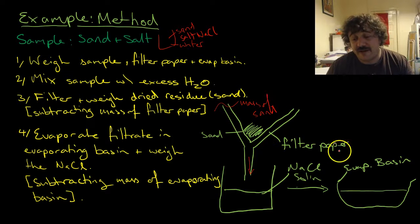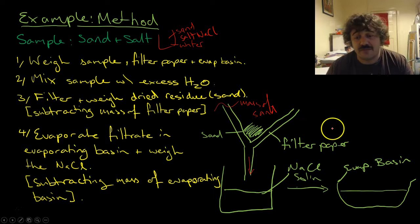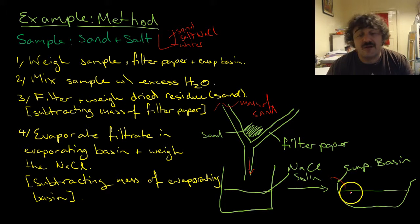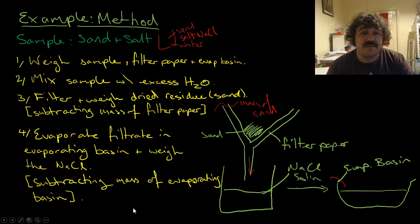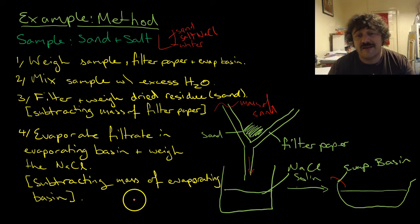Then we evaporate the filtrate in an evaporating basin, probably in an oven. You don't want to do it boiling with fast heat, because as it boils it will spit out and take out particles of sodium chloride. When this is fully evaporated in an oven, you weigh it, subtract the mass of the evaporating basin from the weighed mass. That's the mass of your salt. It's that simple. That's the method, that's your multi-stage separation.